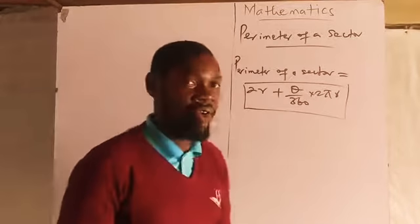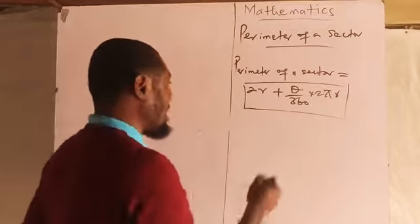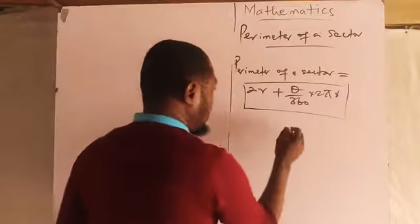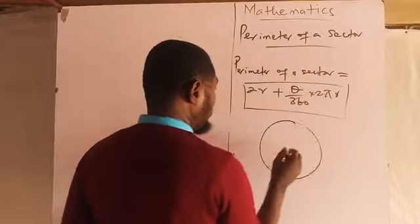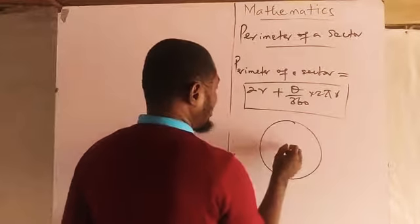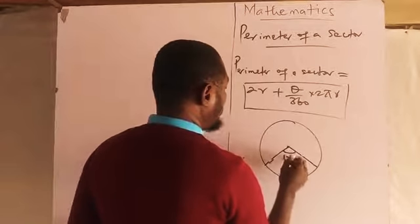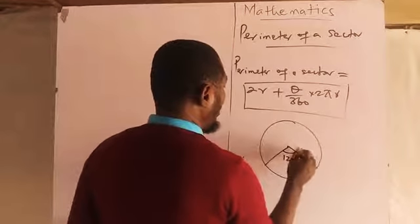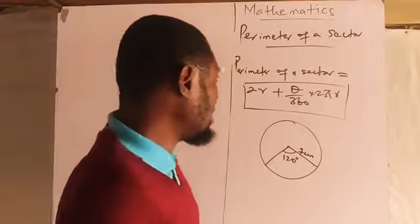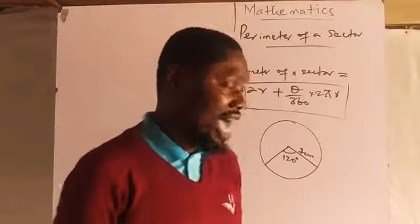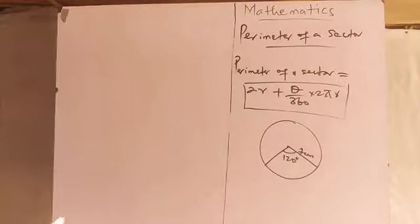Now let us use the circle with 120 degrees. You have the center of the circle, an angle of 120 degrees, and a radius of seven centimeters. Let's find the perimeter of that sector.